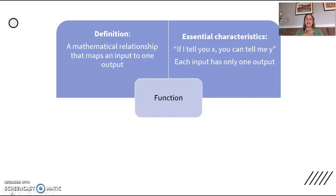So some essential characteristics for a function: If I tell you x, you can tell me y, and your answer is going to be the same as everybody else's answer. So each input is going to only have one output. You're never going to have more than one output for an input.